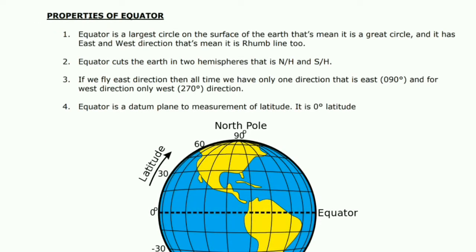Properties of equator: Number one — the equator is the largest circle on the surface of the earth, meaning it is a great circle, and it has an east and west direction, which means it is also a rhumb line. Number two — the equator cuts the earth into two hemispheres: the northern hemisphere and the southern hemisphere. Number three — if we fly in the east direction we always have only one direction, 090 degrees, and for the west direction, 270 degrees — even if circling many times. Number four — the equator is a datum plane for the measurement of latitude, or you can say it is zero degrees latitude.